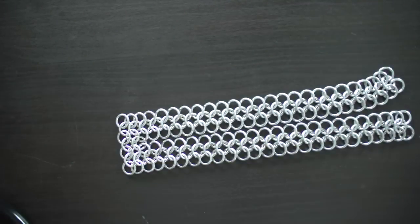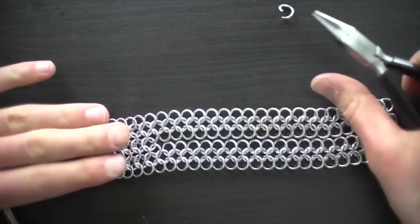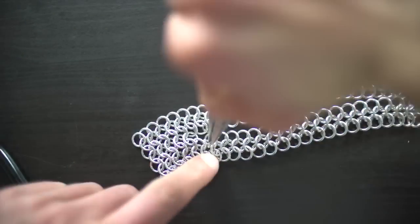This is the basis for how to make chain mail sheets. You can add multiple rows or make these rows longer to make bracelets, cuffs, vests, shirts, etc.